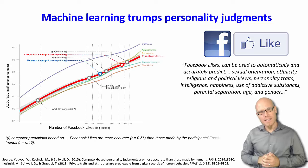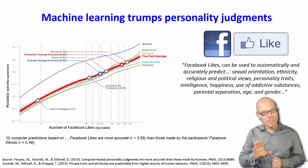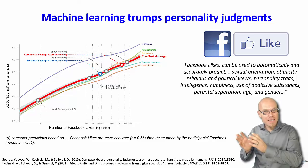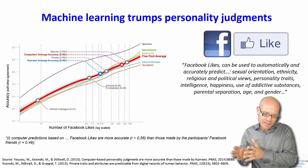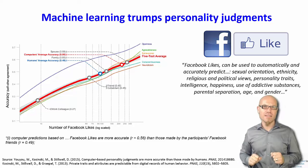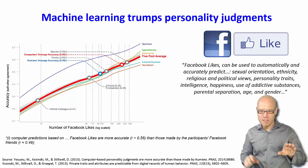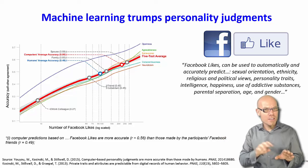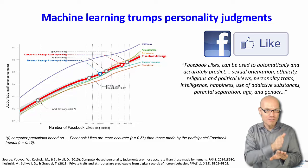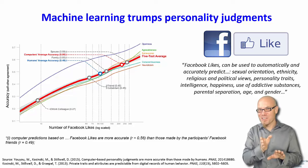In one study, participants were given a personality test — a typical test where you fill out all the questions to classify your personality. Then their friends filled out the same test as they thought the participant would answer. So they had the participant's own personality result and how their friends thought their personality was. Then they ran machine learning algorithms over the participants' Facebook likes, and it turned out the machine's predictions about personality traits were closer to the actual test results than what the friends had predicted. So machine algorithms actually know you better than your friends.